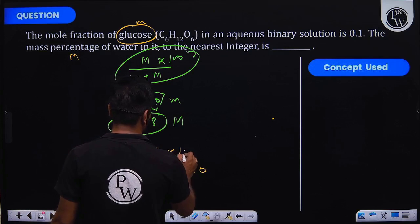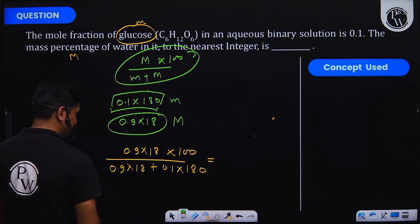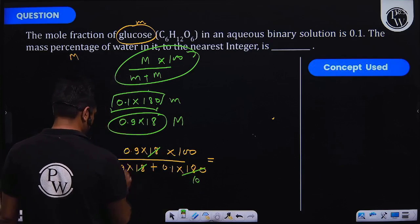This time I will also solve the expression fully. So we can cancel this 18, this 18, and this is equal to 10 times. In the numerator we will get 0.9.